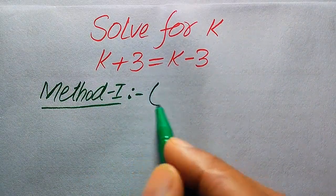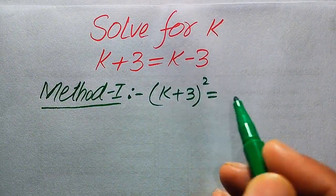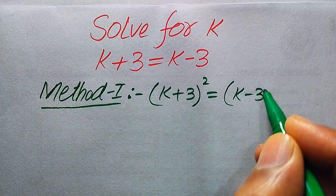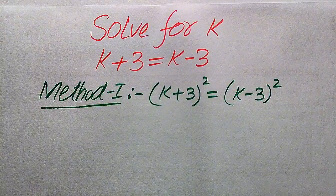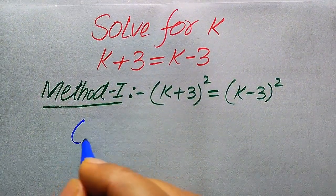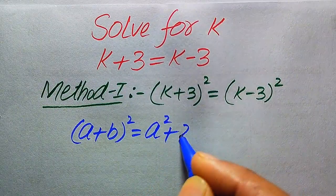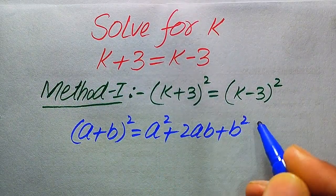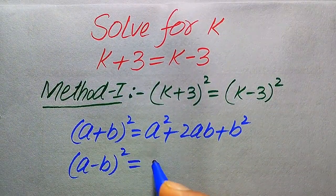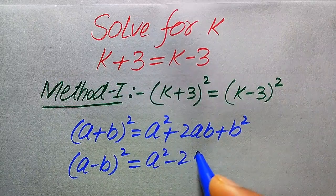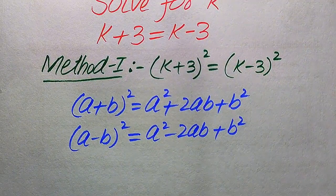In the first method, we take squaring on both sides. When we apply squaring on both sides it becomes (k+3)² equals (k−3)². In the next step we use two algebraic formulas: (a+b)² equals a² plus 2ab plus b², and (a−b)² equals a² minus 2ab plus b².